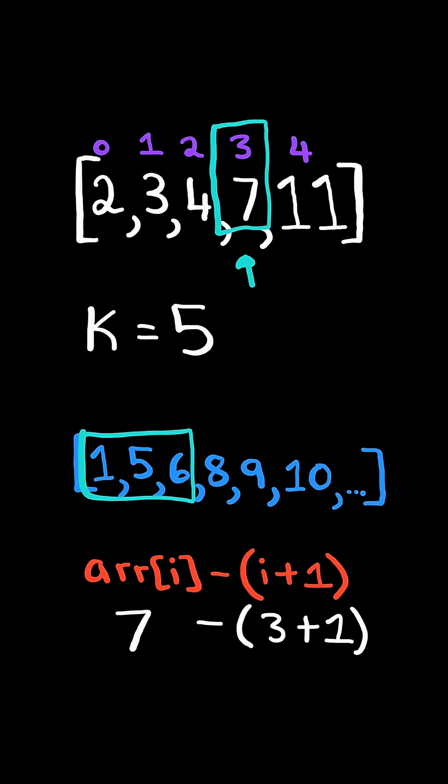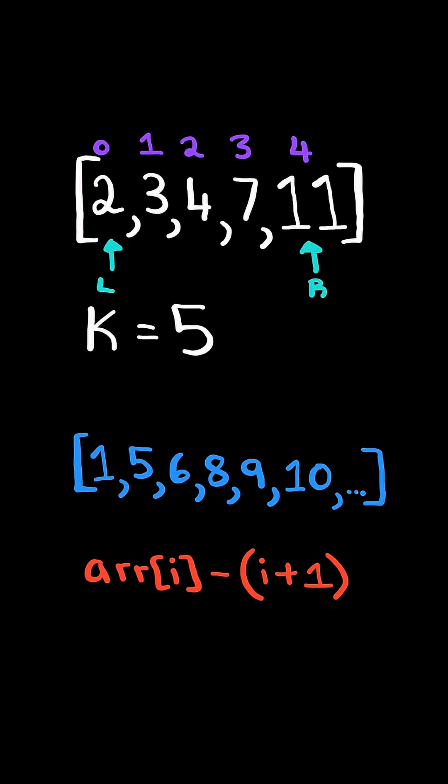For example, if we take 7 and subtract it by 3 plus 1, this gives us the number of missing numbers.